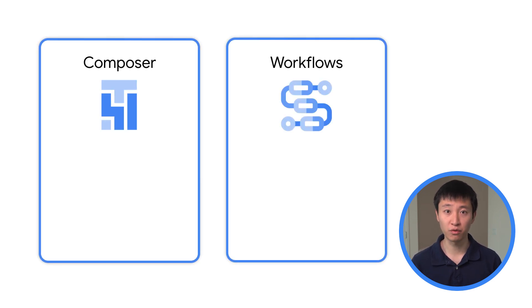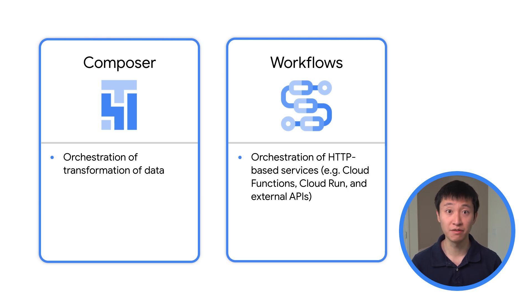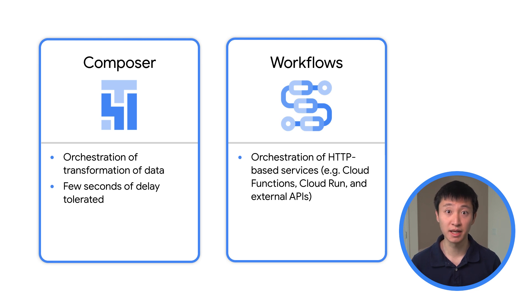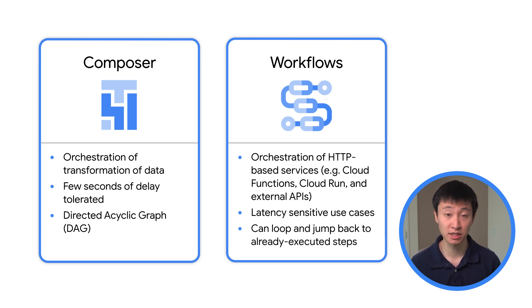Both Composer and Workflows are great for orchestrating multiple services and handling long-running workflows. However, there are several key differences to highlight. Composer is designed for orchestration of the transformation of data as part of ETL or data engineering workflows. Workflows, on the other hand, is focused on the orchestration of HTTP-based services built with Cloud Functions, Cloud Run, and external APIs. While Composer is designed for orchestrating batch workloads that can handle a few seconds of delay between tasks, Workflows is designed for more latency-sensitive use cases. And while Composer tasks can be modeled as a directed acyclic graph, Workflows can work for use cases where you need loops and jumps to already executed steps.